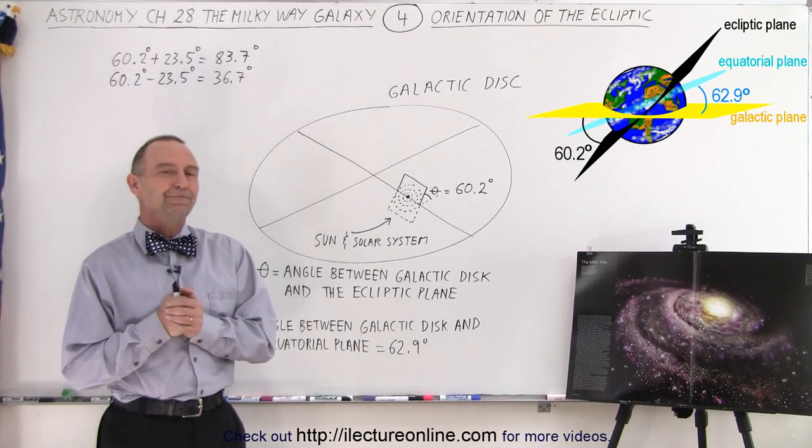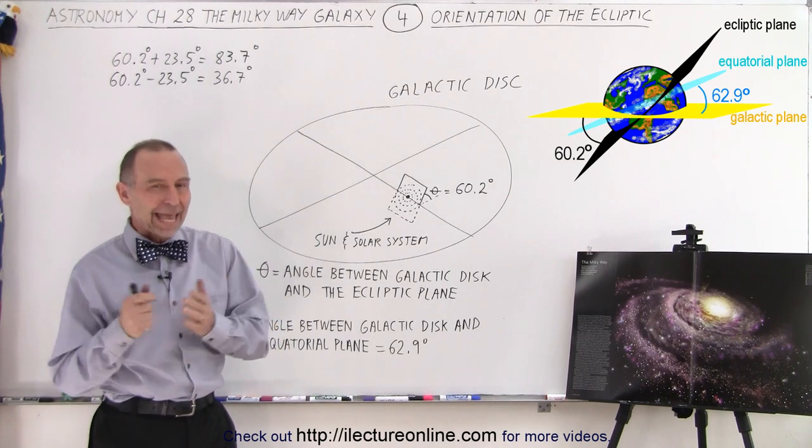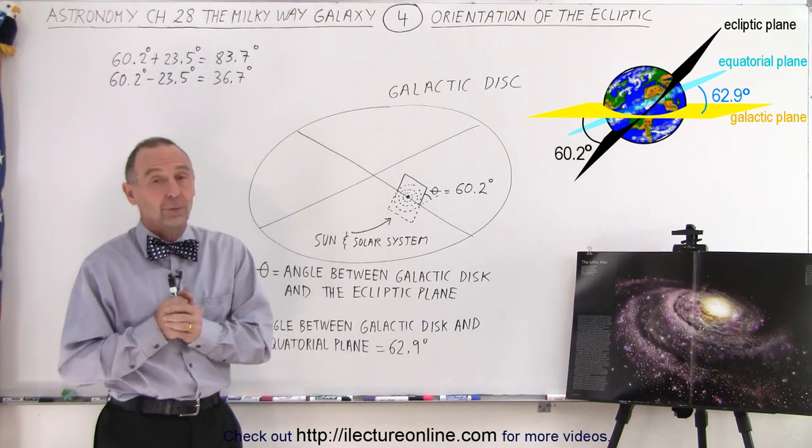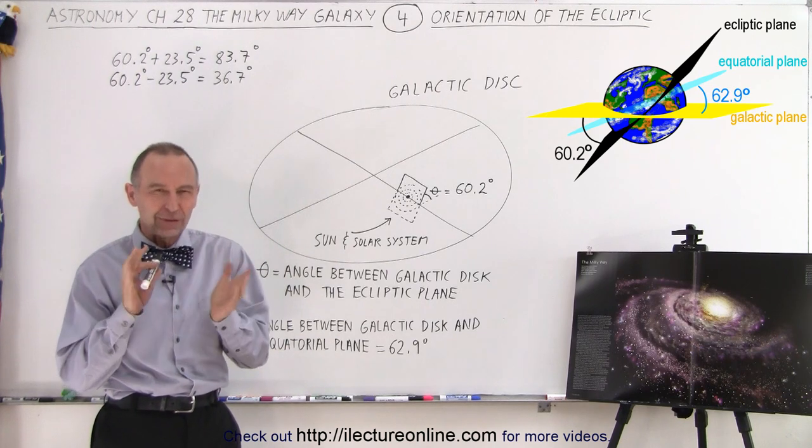Welcome to iLecture Online. So how is the ecliptic of our solar system and the Earth's axis oriented relative to the galactic disk? That's a good question and not so easy to visualize.